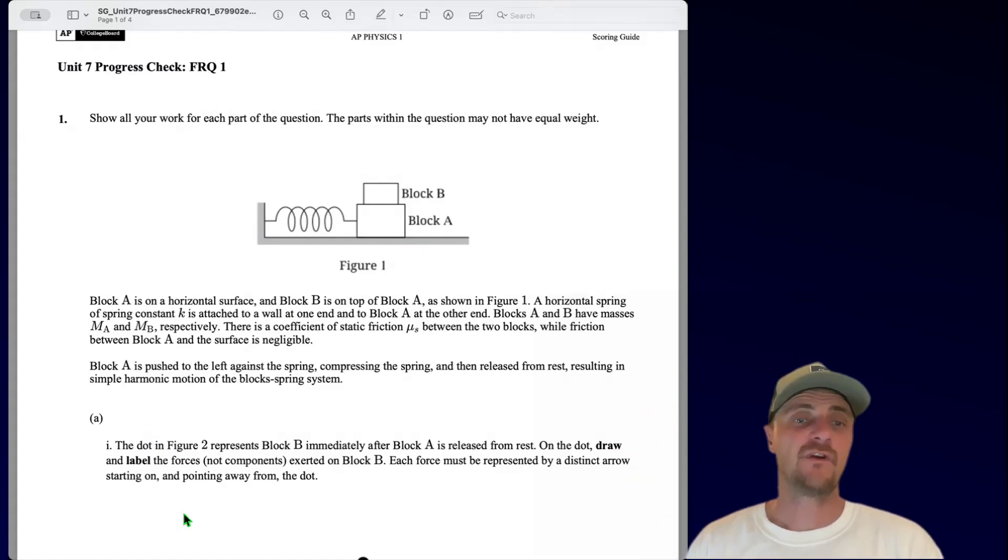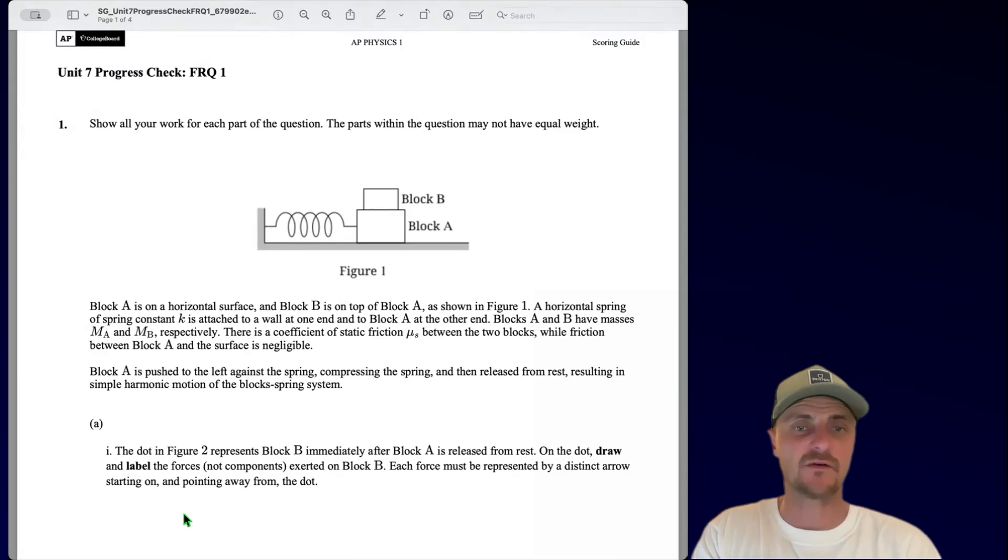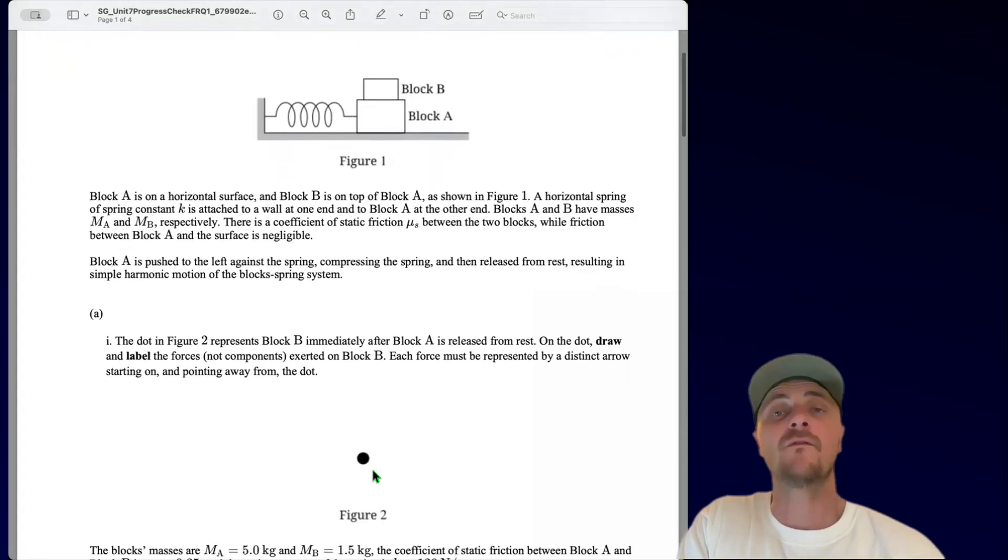Part A1. The dot in figure 2 represents block B immediately after block A is released from rest. On the dot, draw and label the forces, not components, exerted on block B. Each force must be represented by a distinct arrow starting on and pointing away from the dot. So here's our dot, and we need to draw all the forces but not components on this dot.